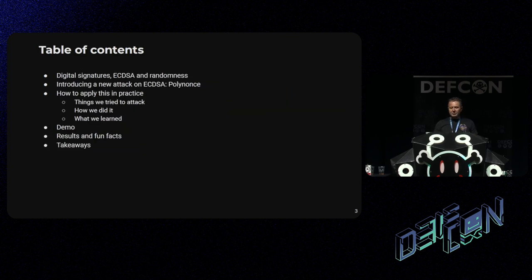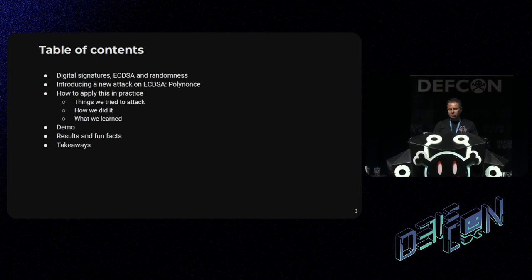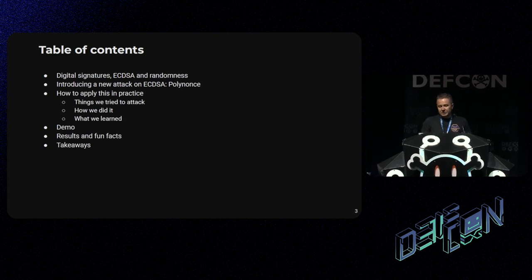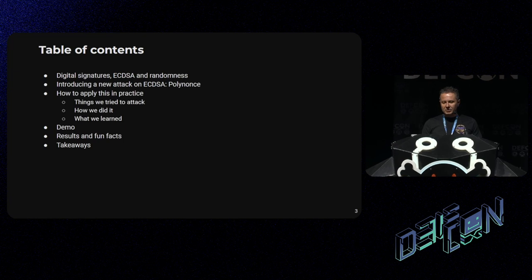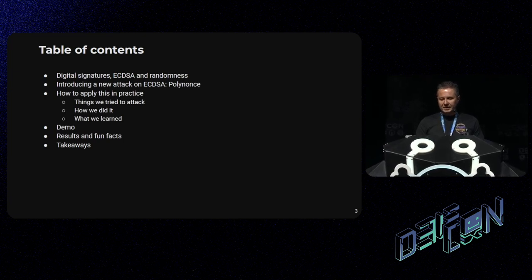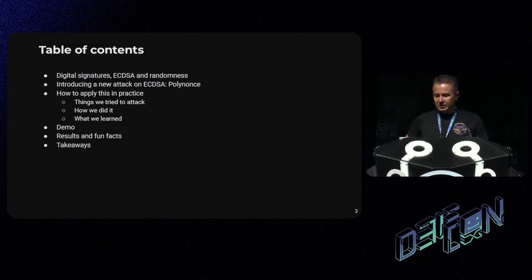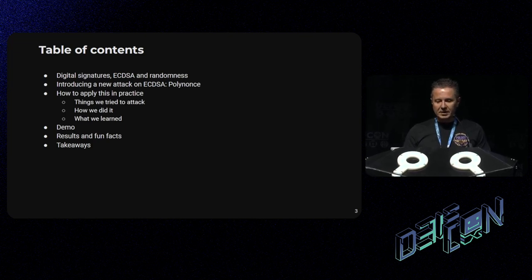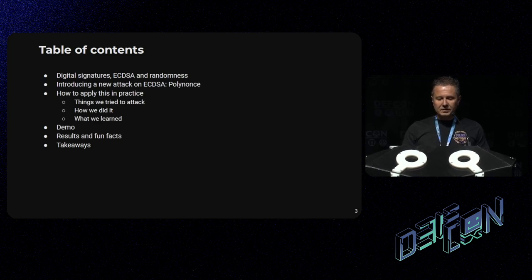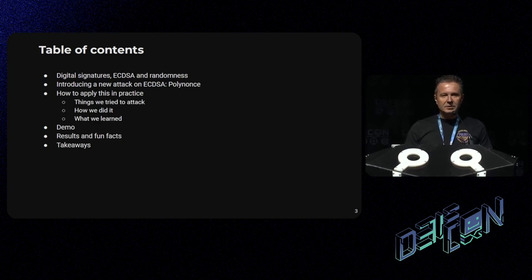So what are we going to talk about today? This is a new attack that we devised against an algorithm to generate digital signatures, which is called ECDSA. It's well known for being the digital signature algorithm behind the Bitcoin blockchain. This attack is called Polynonce. We will give you some details of the attack, how we did it, what we learned in the process, and there will be a brief demo.